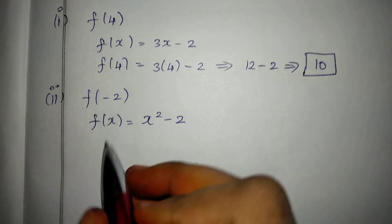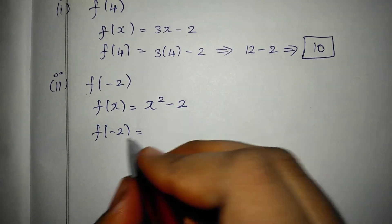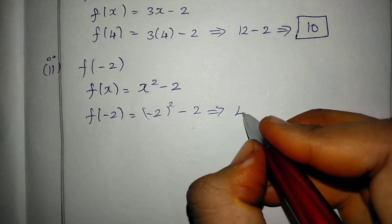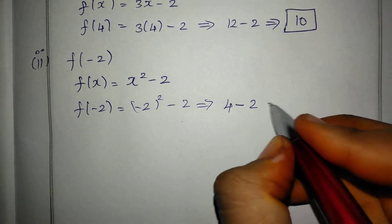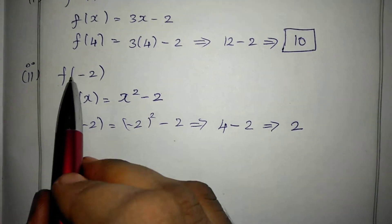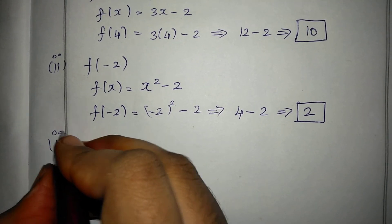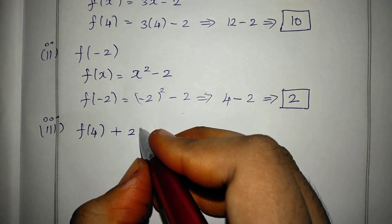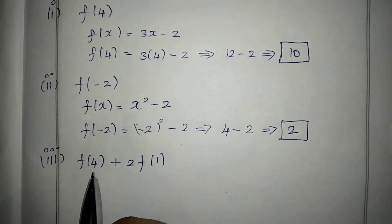f(minus 2) is equal to — and next, third subdivision — f(4) plus 2 into f(1). f(4) is equal to 10.